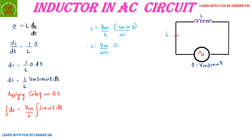Now −cos(ωt) can be written as sin(ωt − π/2). I have made this change because Vm was expressed in terms of sin, so I need i also in terms of sin. As you can see, the phase difference obtained is −π/2, so the phase difference is minus pi by 2.